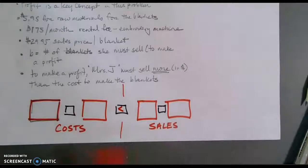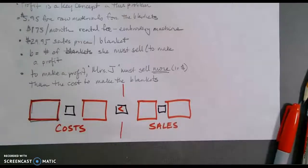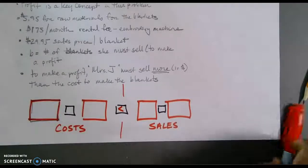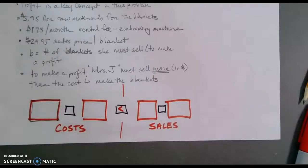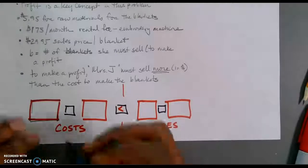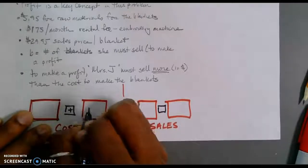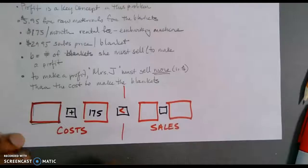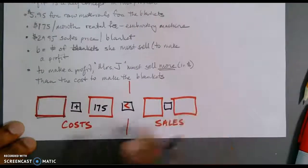Now, when we are trying to find what our variables will be, those are the things that we do not know. We do not know how many blankets she is going to need to make. But what I do know in terms of her costs would be that she will have $175 costs from that machine.